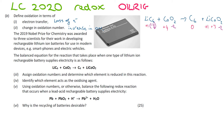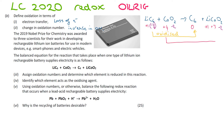It says to assign oxidation numbers and determine which element is reduced. We draw an arrow and look at each element: lithium is plus one and goes to plus one, so nothing happens there. Carbon goes from minus one-sixth up to zero — that's an increase in oxidation number, so carbon has been oxidized. Cobalt has gone from plus four down to plus three, which is a decrease in oxidation number, so cobalt has been reduced.